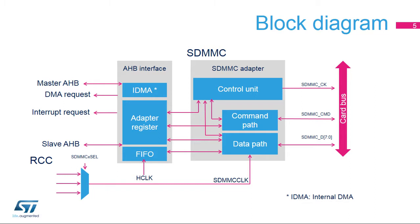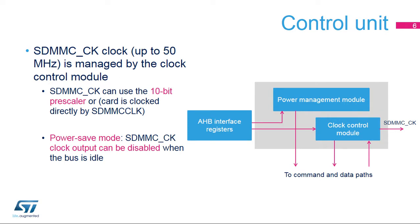Two clocks are available for the SDMMC controller: the APB clock (PCLK) for the APB interface, and the SDMMC clock (SDMMC-CLK) for the SDMMC adapter. The SDMMC adapter includes a control unit containing a power management module and a clock control module with a clock divider for the card clock, SDMMC-CK. The clock control module provides a 10-bit pre-scaler for SDMMC-CK clock generation, ranging from SDMMC-CLK down to SDMMC-CLK/2046. DDR memory devices are not supported in divide-by-one mode.